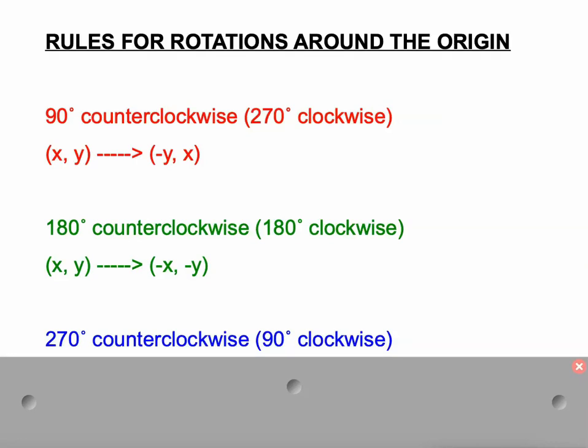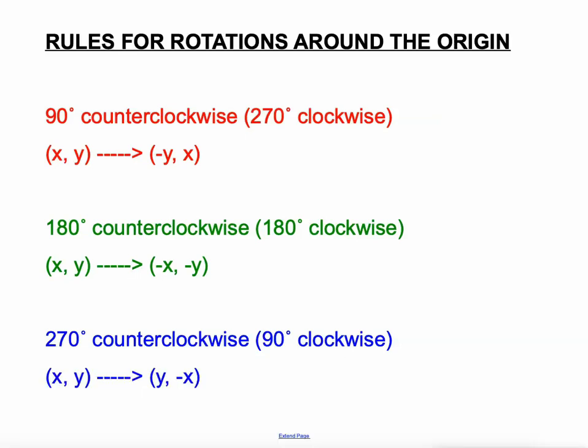Our last rule is a 270 degree counterclockwise rotation, which is equivalent to a 90 degree clockwise rotation, and that's where XY becomes Y, negative X. So our new X is our old Y and our new Y is the opposite of our old X. If you write these down right now, or maybe even pause and take a screenshot, it'll be very helpful as you work through this skill on IXL. Let's do a few examples.